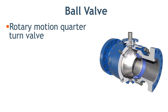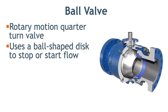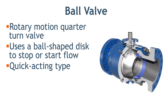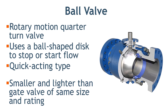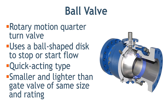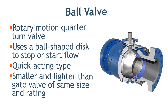A ball valve is a quarter-turn rotary motion valve that uses a ball-shaped disk to stop or start the flow. Most ball valves are of the quick-acting type which require a 90-degree turn of the valve handle to operate the valve. The ball valve is smaller and lighter than a gate valve of the same size and rating.